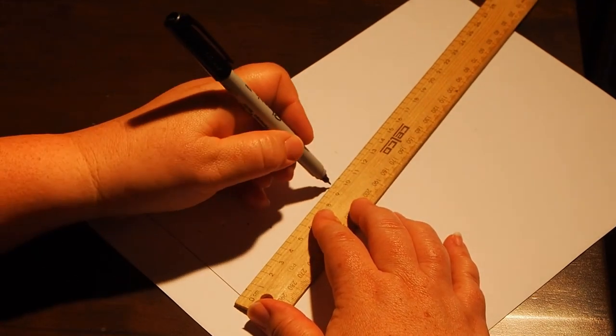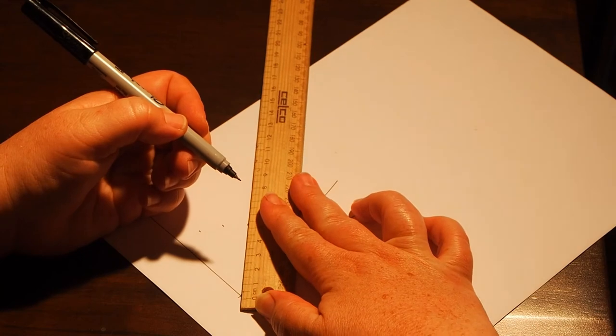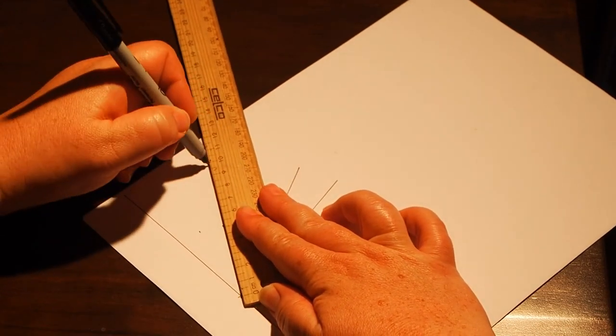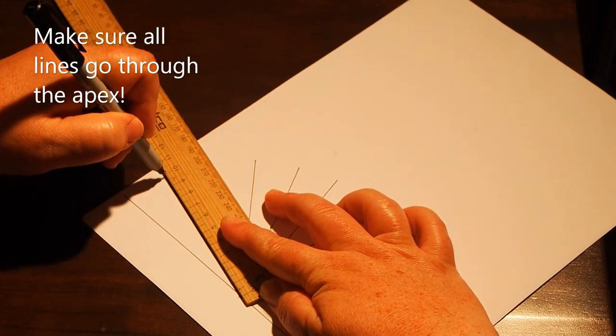Then, draw a line 10 cm long at each angle, being careful to make sure you line up your ruler each time to ensure the line goes through the apex point. This will give you a better result at the end.